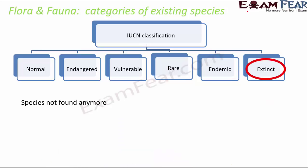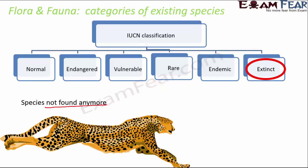The last category is extinct species — species which are not found anymore. Once a species is extinct, nothing can be done, because once each and every individual of that species is gone, we cannot revive it. Examples include the Asiatic Cheetah, declared extinct in India in 1952. A species may be extinct from a local area, a country, or the entire Earth — as in the case of dinosaurs, which once existed but are now totally extinct worldwide.